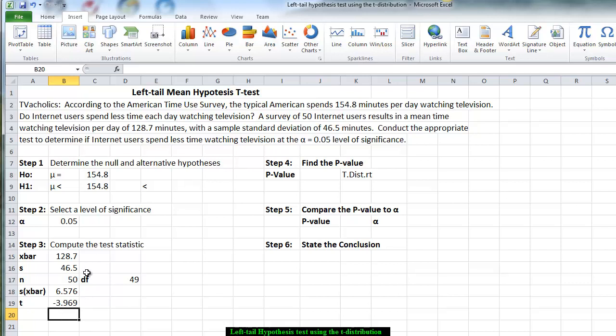You notice that it is a negative 3 and 969 thousandths, almost four standard deviations below the mean. So what we really have determined is that the probability that the x bar is less than 128 and 7 tenths of a minute. We are literally looking for the area on the left hand tail.